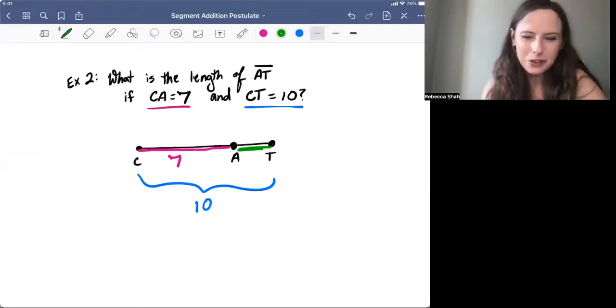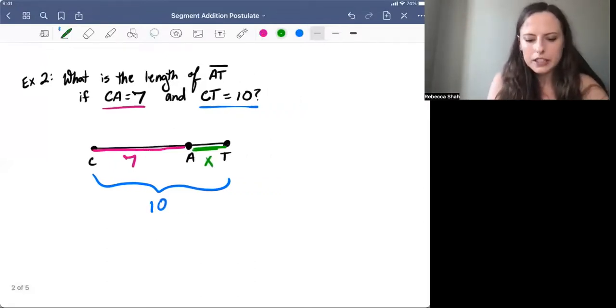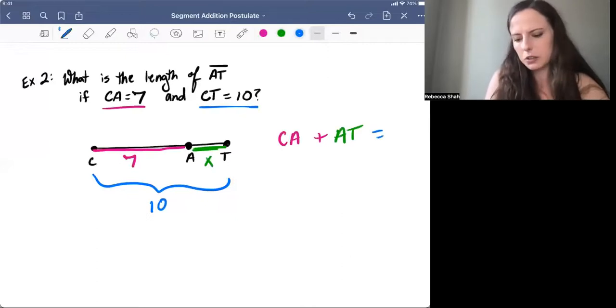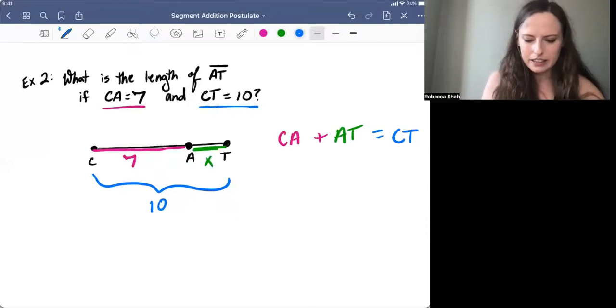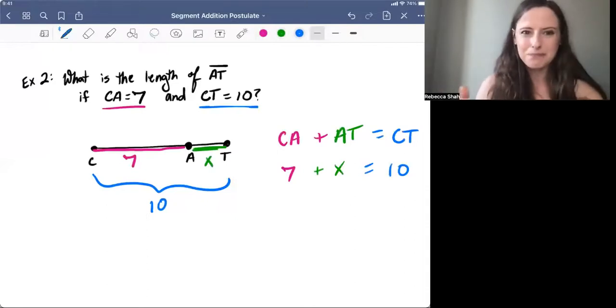Well, in math, whenever you don't know what something is, a good strategy is to just call it X. So we could say now using the Segment Addition Postulate, we know that CA, one part, plus AT, the second part, has to add up to the total, CT. Well, from here, it's just plugging in our numbers. CA, we said was seven, AT is our X, and CT is 10. So seven plus X has to add up to 10.